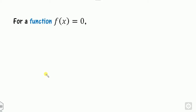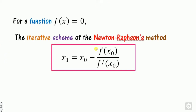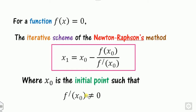We will discuss how this Newton-Raphson method works for finding the root of the equation. This method is used for functions where f(x) = 0, where f(x) may be linear or non-linear. The Newton-Raphson formula is: x1 (the new root) = x0 (previous root) minus f(x0) divided by f'(x0), where x0 is the initial point. Make sure the derivative must be non-zero.